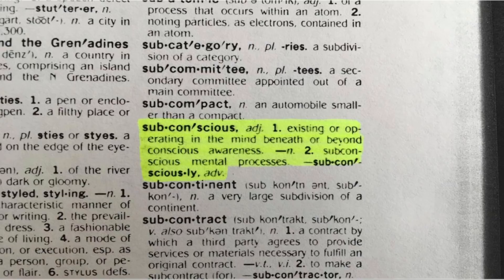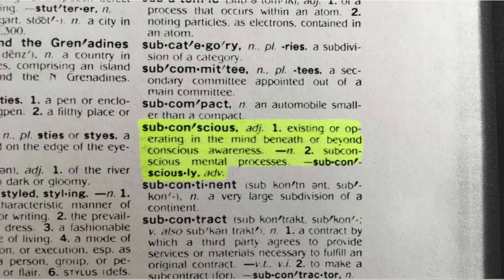I want to go over a few definitions. The first is the subconscious: existing or operating in the mind beneath or beyond conscious awareness. Freud popularized the use of the subconscious but later switched to 'unconscious' because he felt 'subconscious' wasn't precise enough. In my usage, I'm talking about allowing the part of your brain that you can't really control to make decisions, trusting that those decisions will be interesting — possibly more interesting than what you'd reach through conscious awareness.